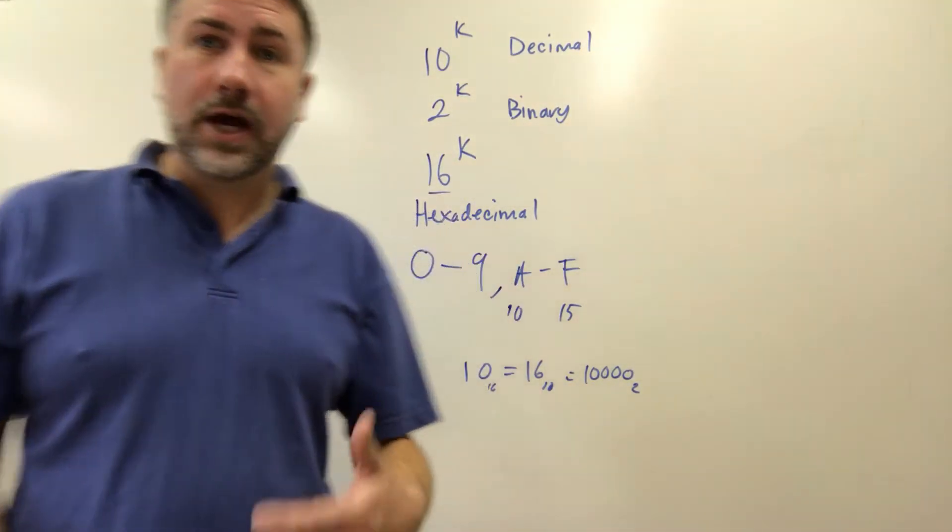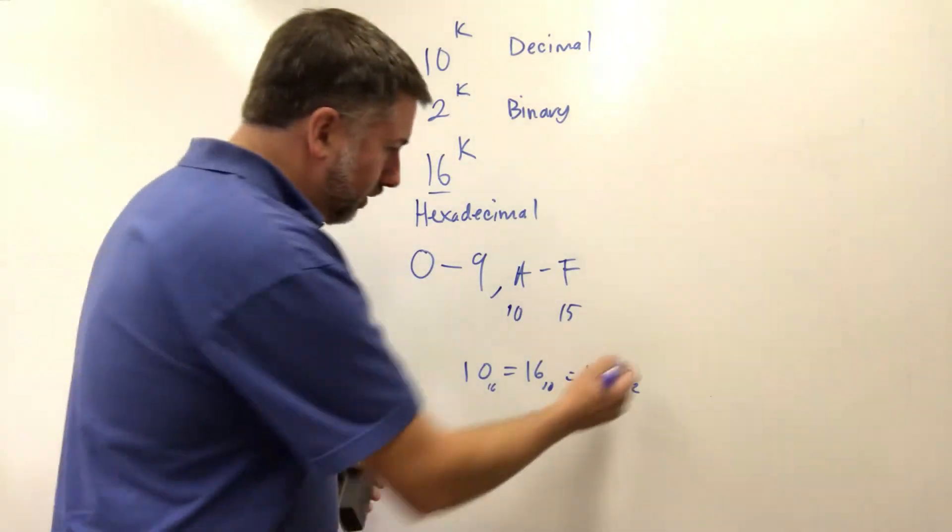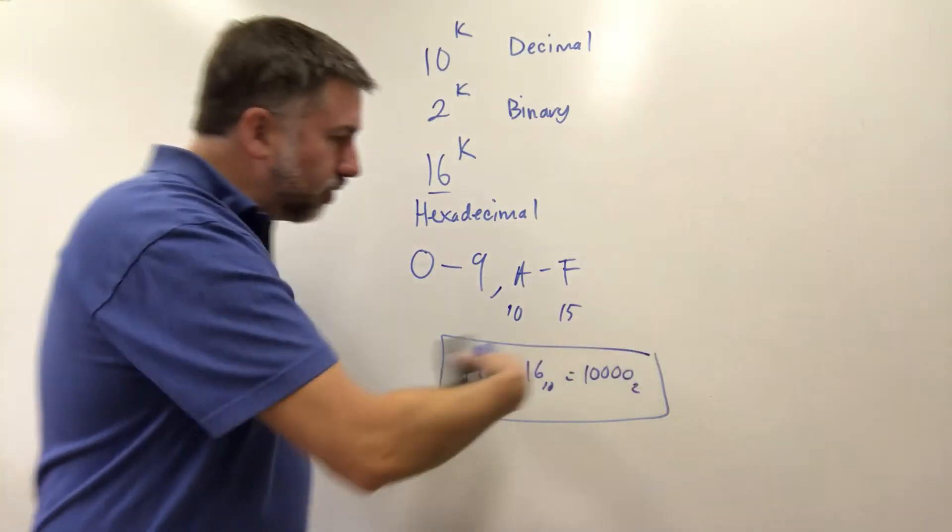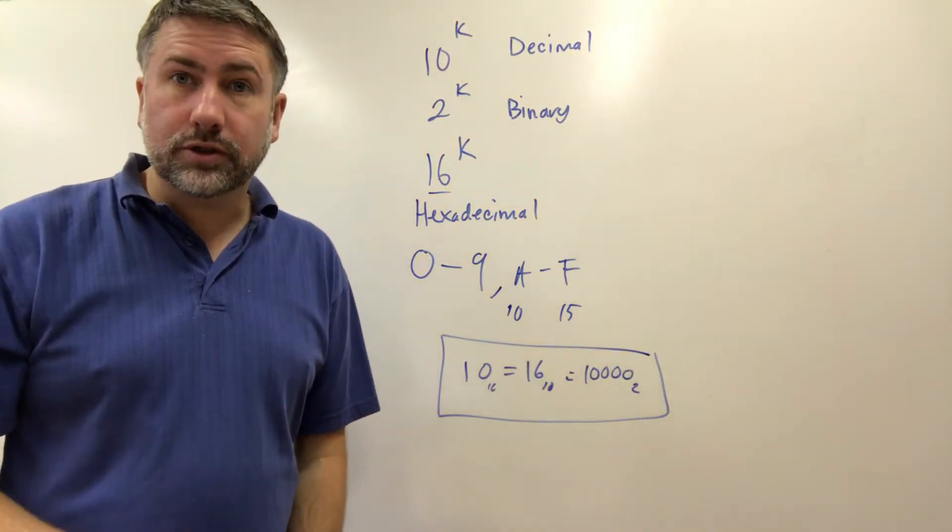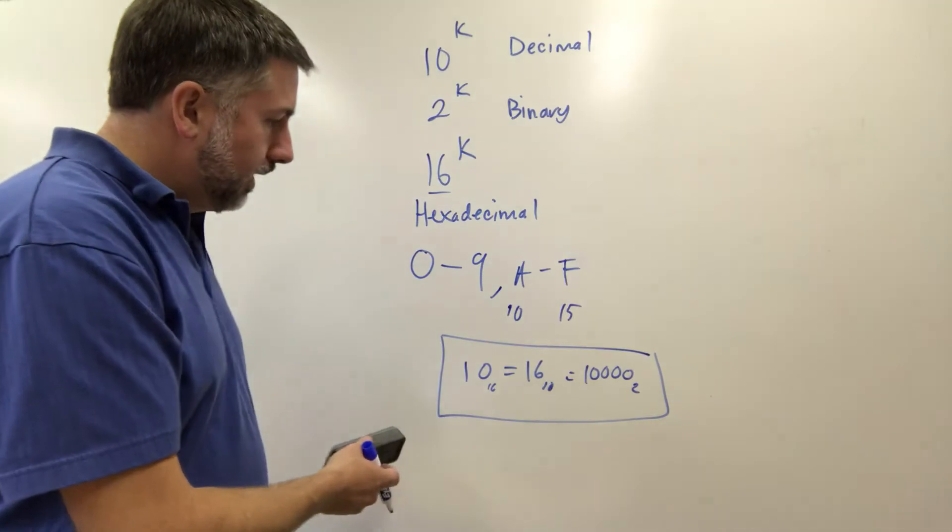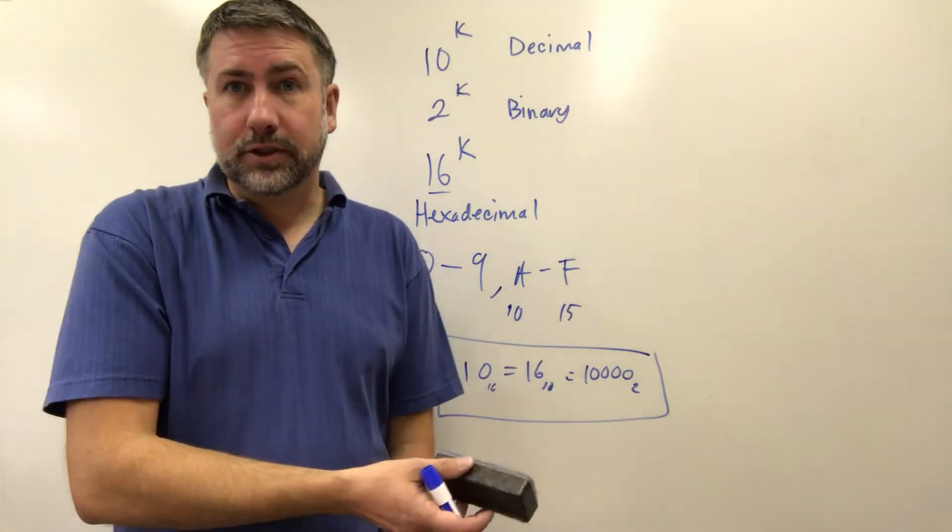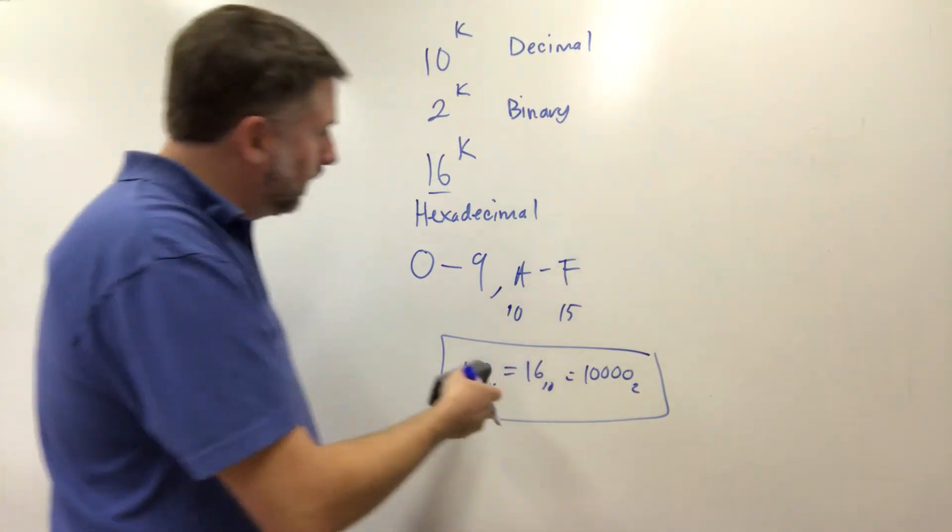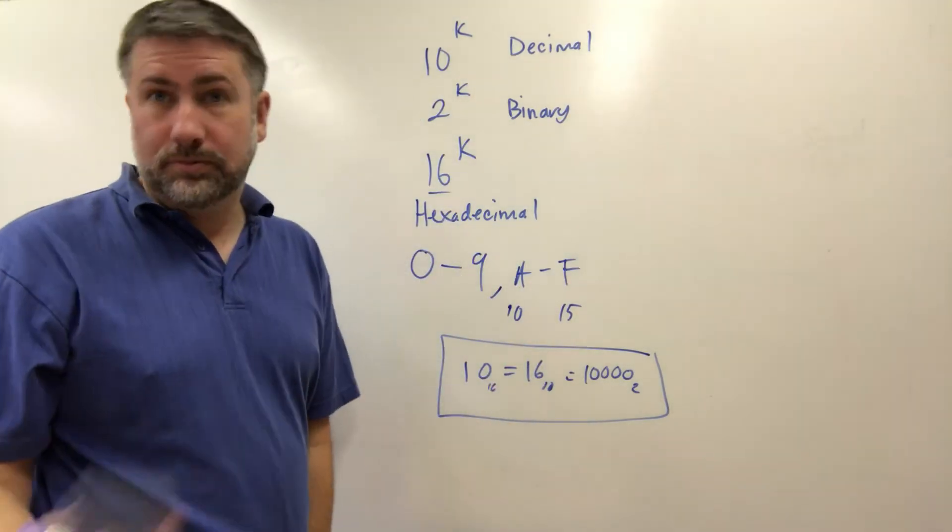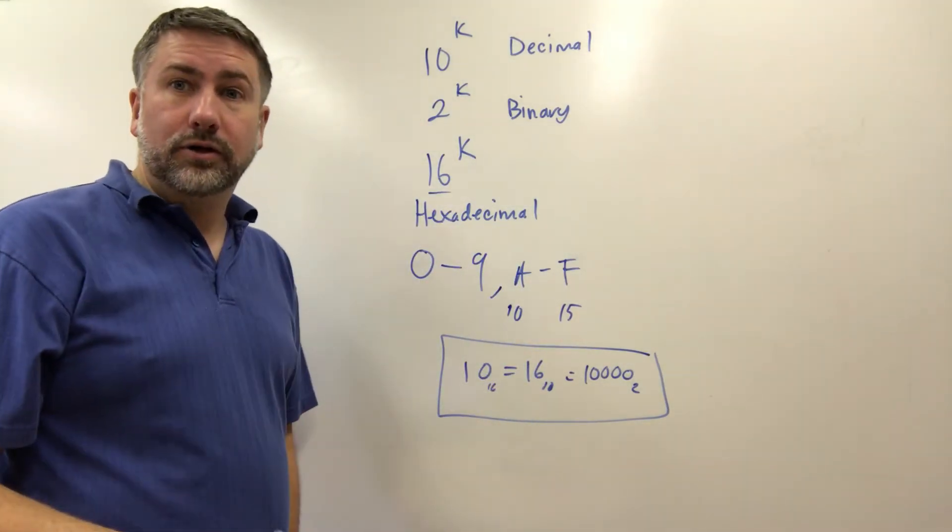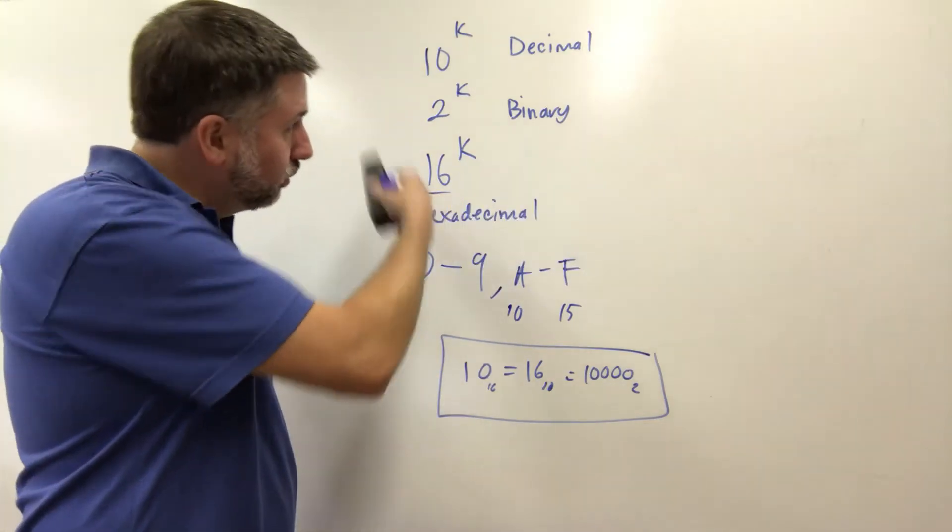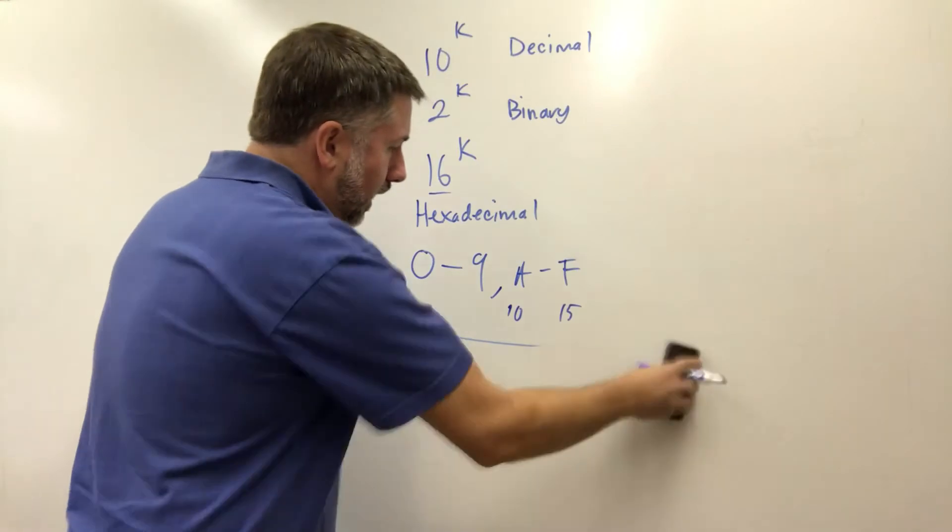So different bases, different ways of representing the same number in those representations. This is a really important thing to be able to do and I would strongly encourage you to practice by taking some random number and converting it back and forth between decimal and binary. Base sixteen hexadecimal we'll do in more detail later on. There are good reasons for using it but for now don't worry too much about it.